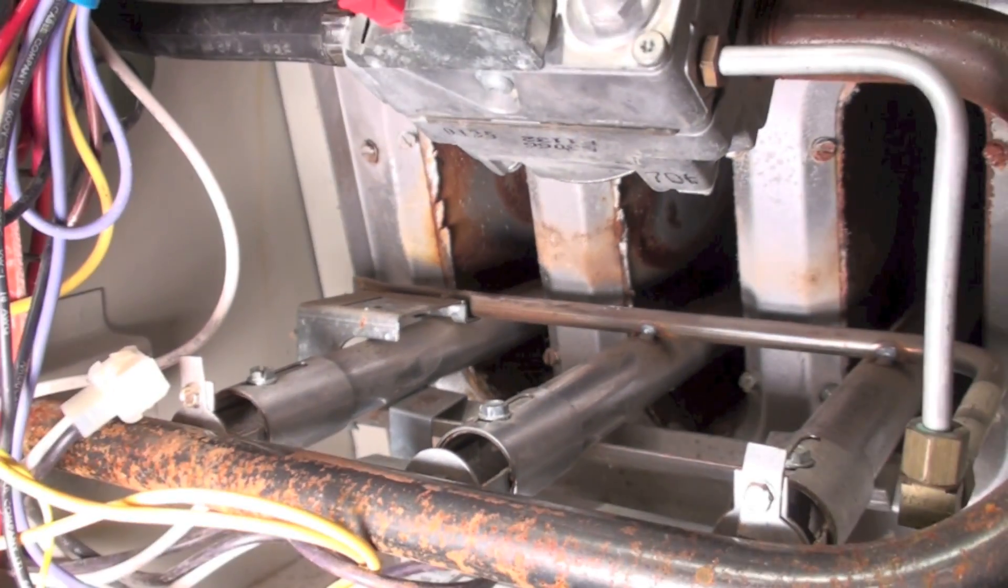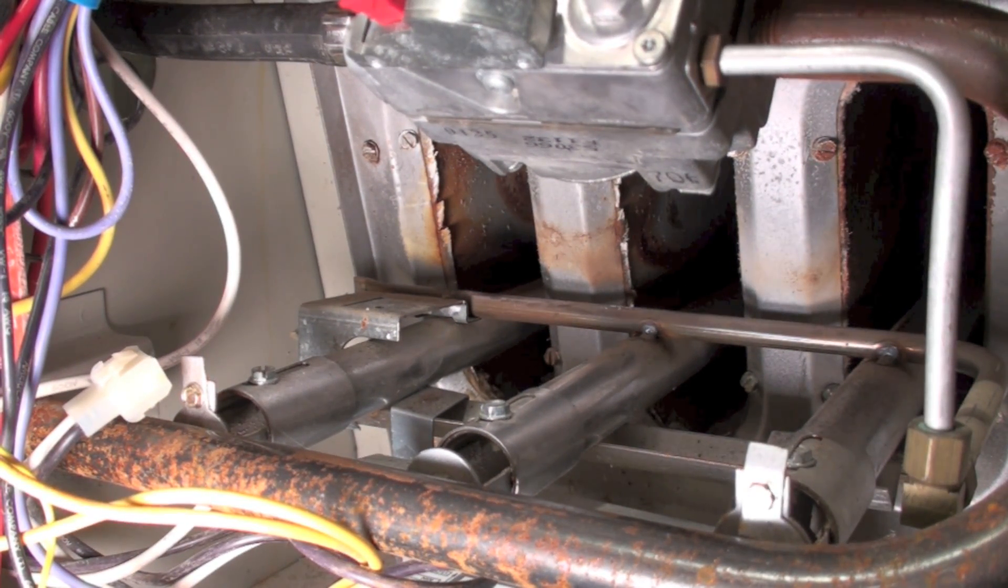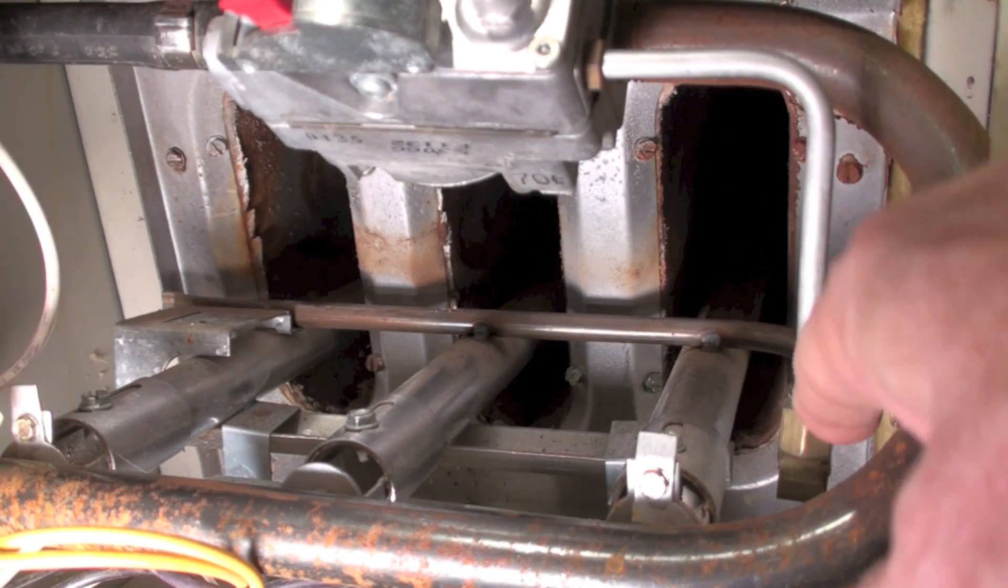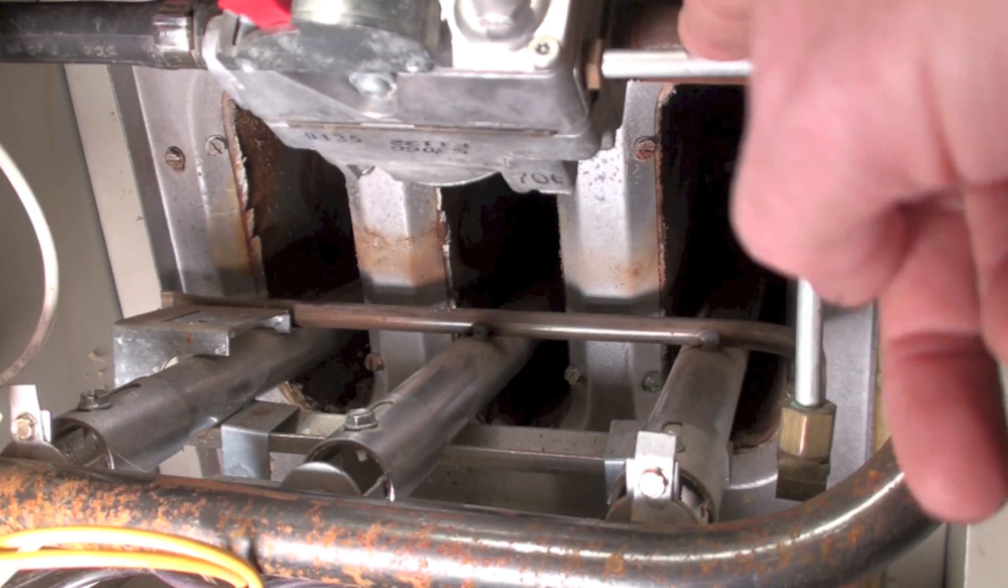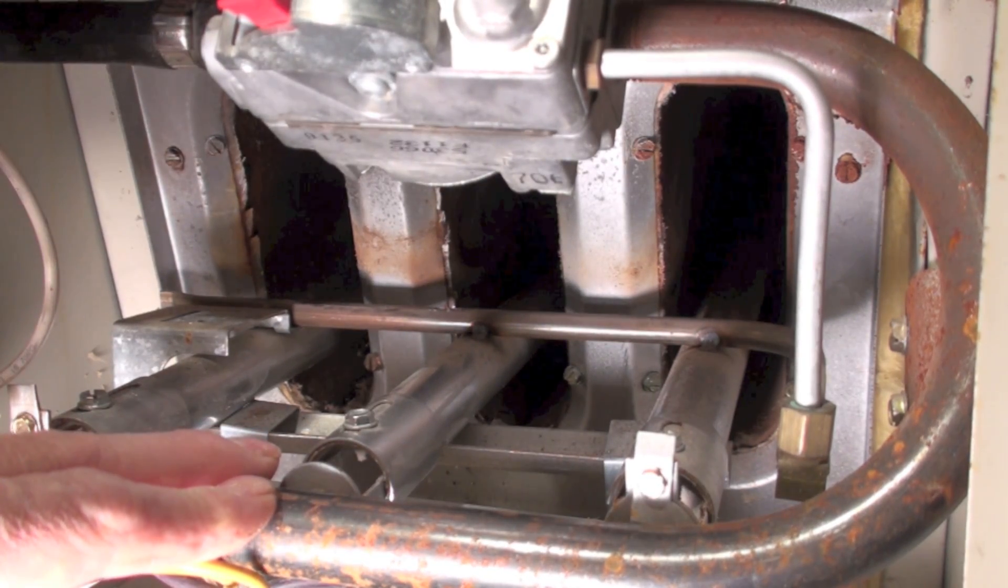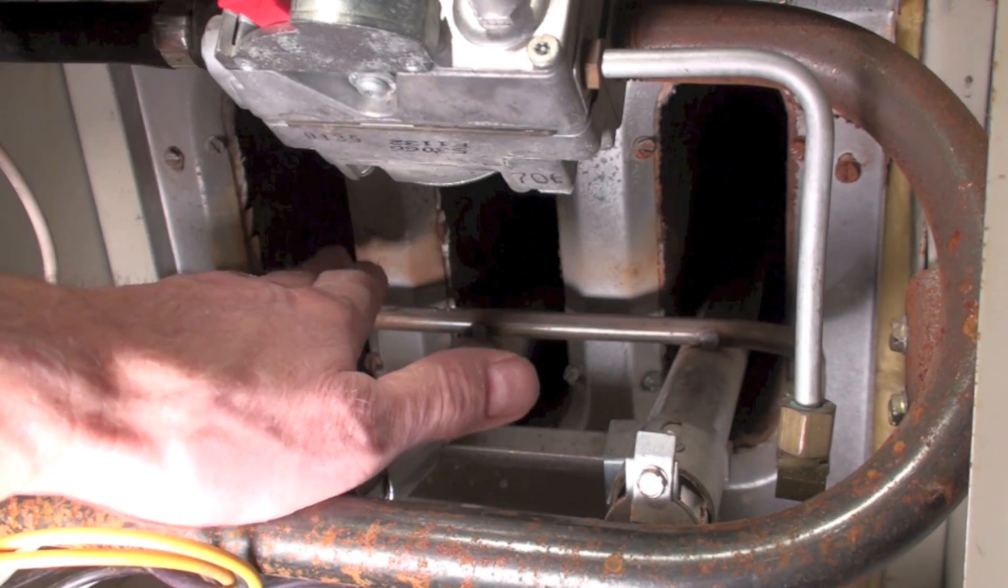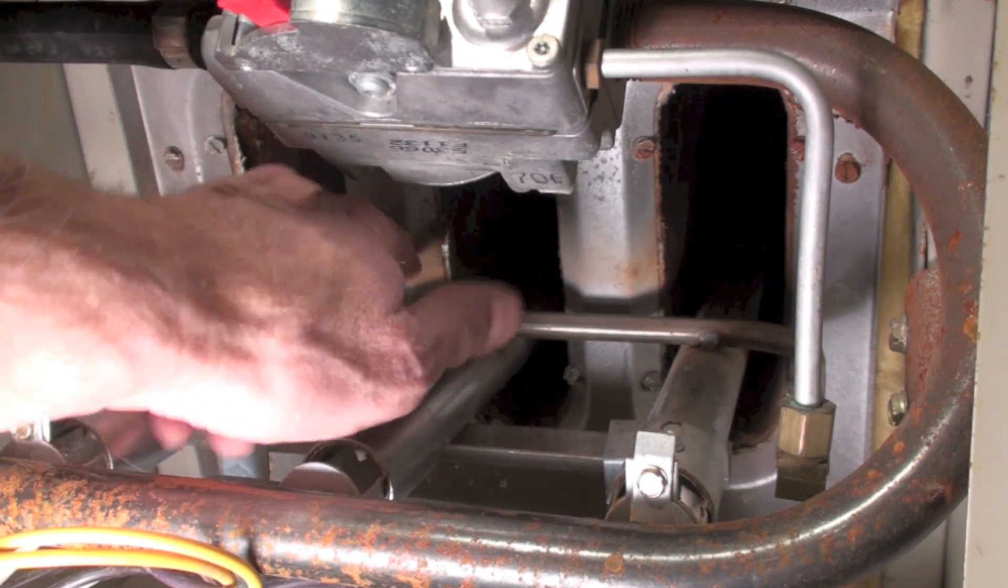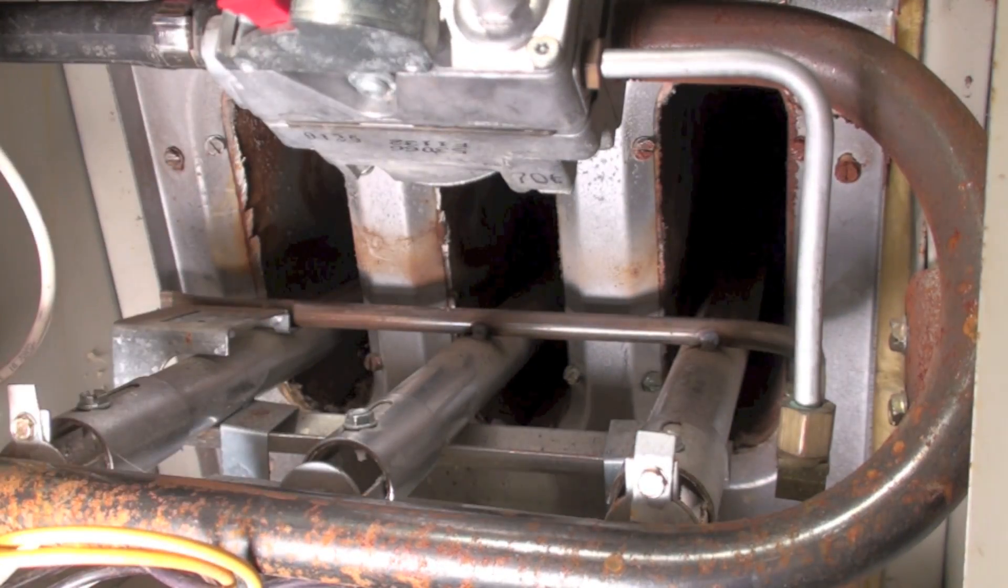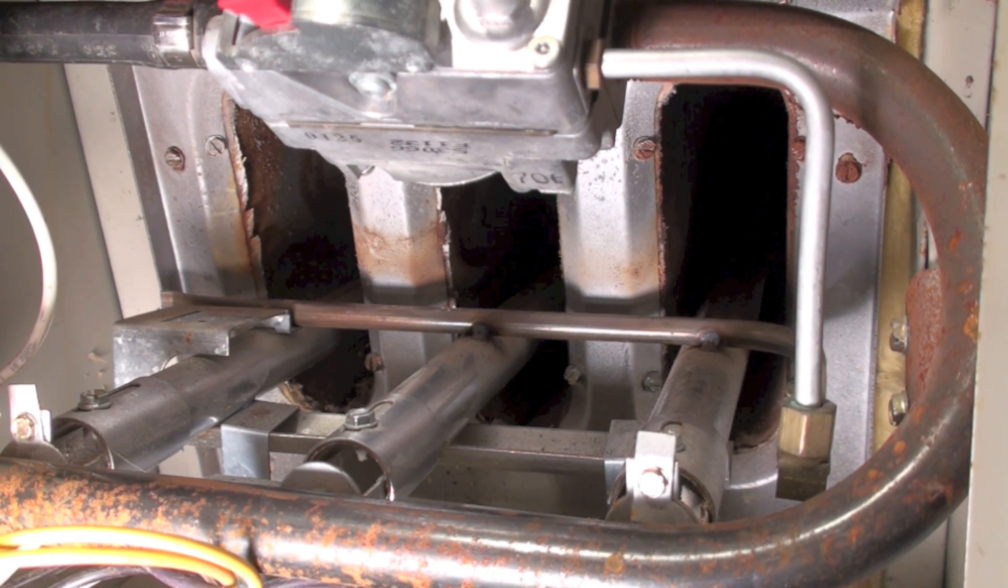Now your burners are pretty much right there. A couple other things you have to do: this burner tube here has to come off because what it does is before the burner comes on, gas will pass through here, go out through here and it will have a little flame right above there. That will prove the flame to the hot surface igniter.